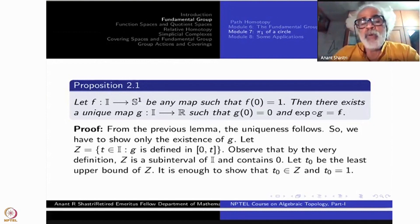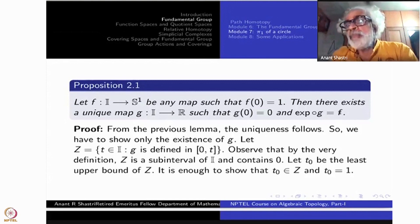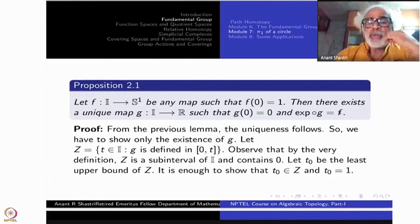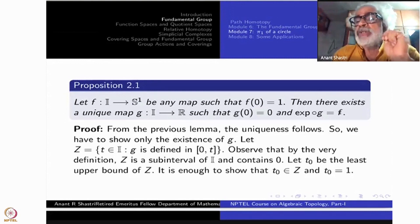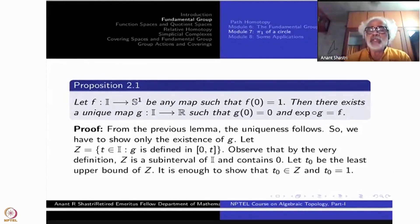How are we going to do this? The uniqueness follows from the previous lemma. Suppose there is one lift, then another one will differ by an integer. But I have fixed g(0) = 0, so that additive integer n must be 0. This means g₁ - g₂ = 0, so g₁ = g₂. That is the uniqueness. We have to show only the existence.